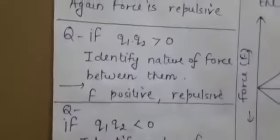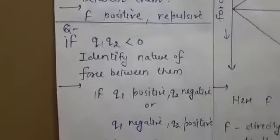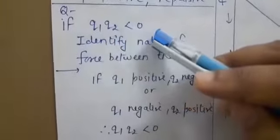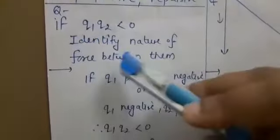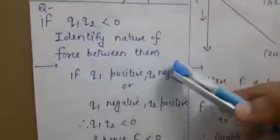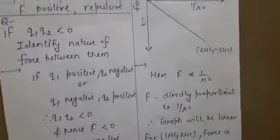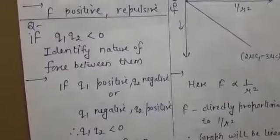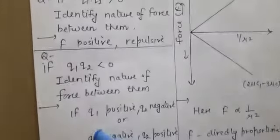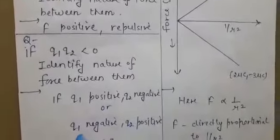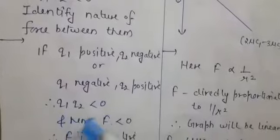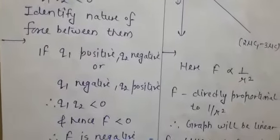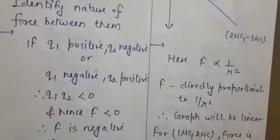Next question on the same concept: if Q1 × Q2 is less than 0, identify the nature of the force. When the product of two charges is less than 0, it means the product is negative. This is possible only if one charge is positive and the other is negative — whether Q1 is positive and Q2 is negative, or vice versa — so the force will be negative, meaning the force is attractive in nature.